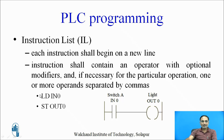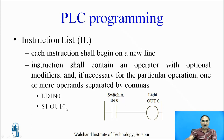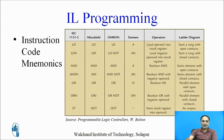Consider a simple ladder diagram with one input switch and one output. To write an Instruction List program for this, the first instruction is LD IN0, which loads the status of switch A into memory. The next instruction is ST OUT0, which reads that status and applies it to the output light.